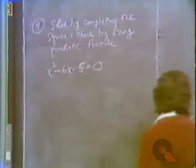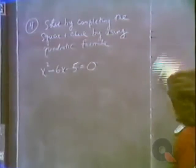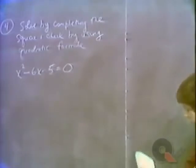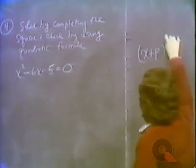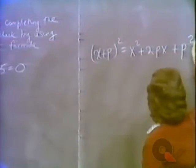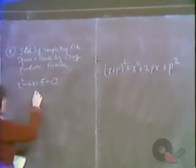Completing the square works by writing the expression as a perfect square and then solving by extracting roots — taking square roots of both sides. Recall that x plus p squared equals x squared plus 2px plus p squared. The first step — which differs from factoring and the quadratic formula — is to get the constant over to the other side rather than keeping everything equal to zero.